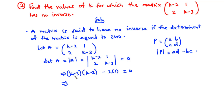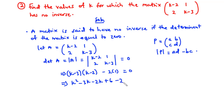Expanding: k times k gives k squared; negative 3 times k is negative 3k; negative 2 times k is negative 2k; and negative 2 times negative 3 is plus 6. Then minus 2 times 1 is negative 2. Simplifying, we have k squared minus 5k plus 4 equals zero.